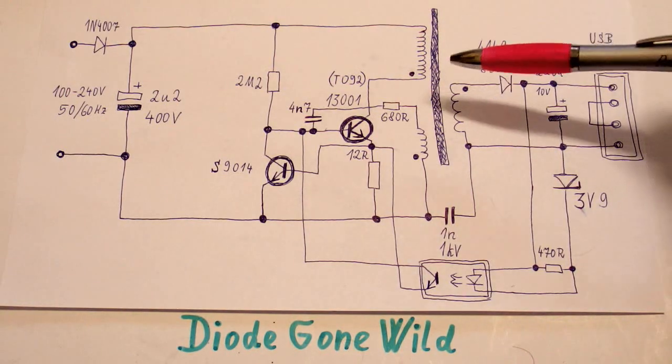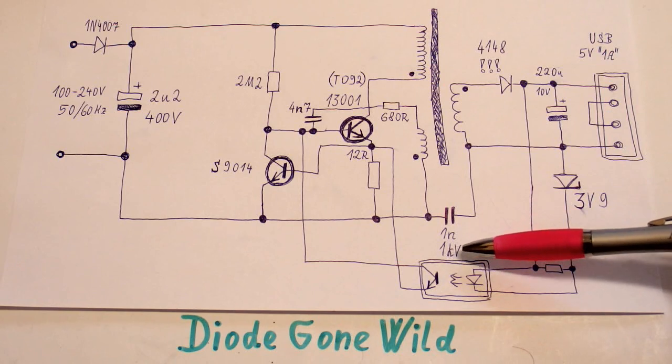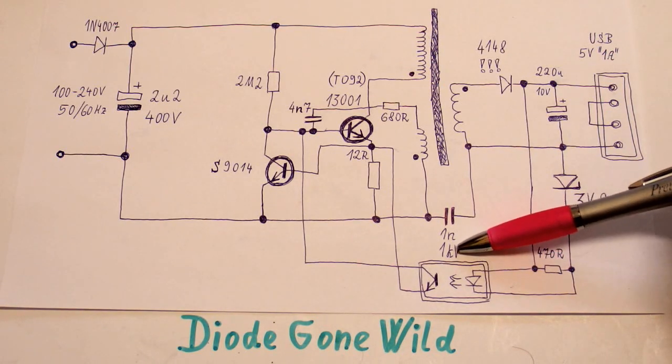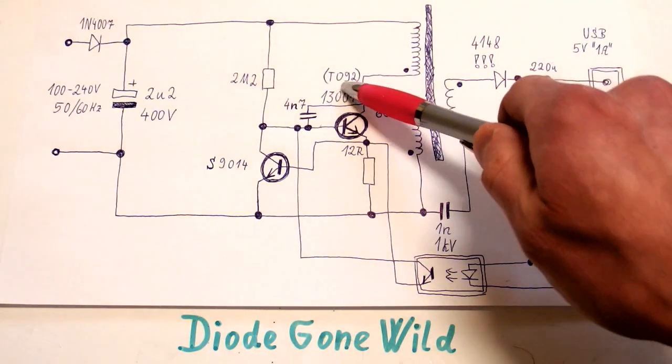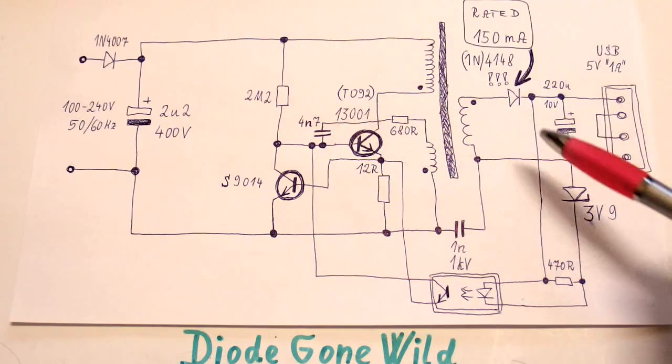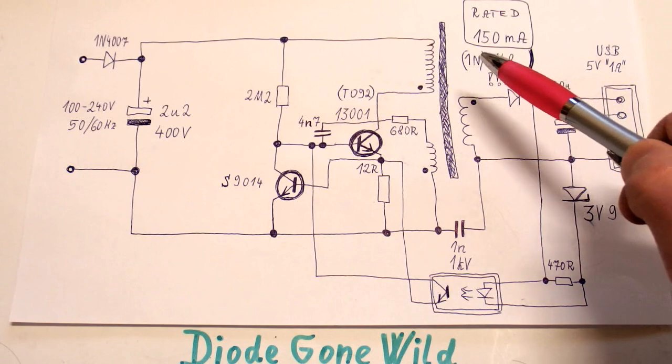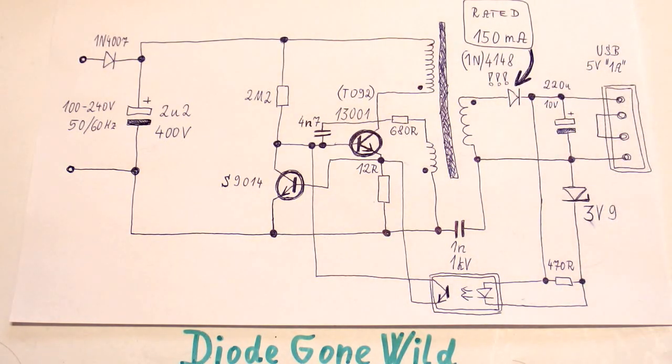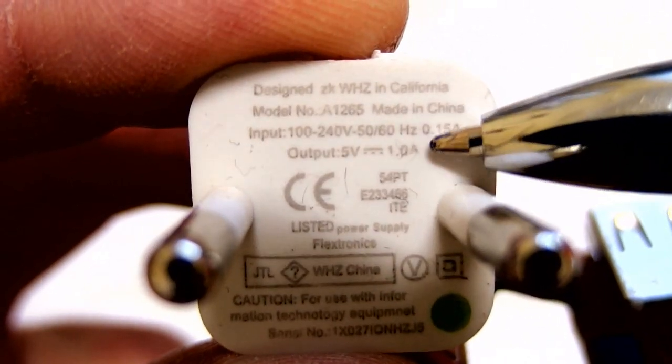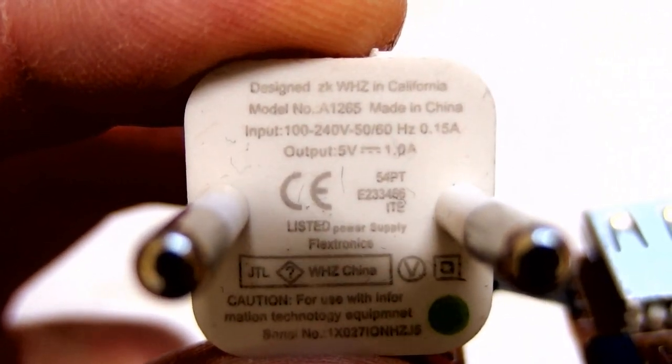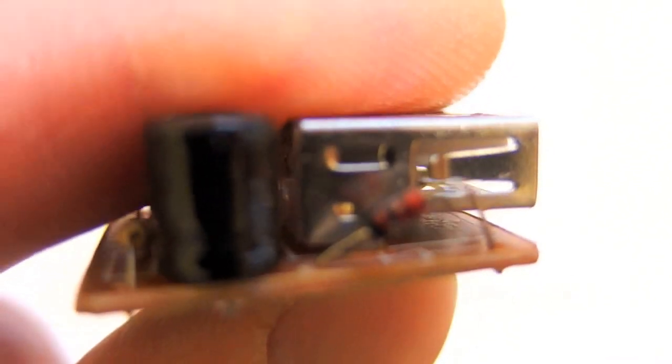This capacitor again is just one microfarad. It should be class Y1 safety capacitor. This transistor is just a tiny transistor in TO92 package. And the diode at the output is 1N4148. The diode rated for 150mA. But the output current should be 1A. It really says 1A, but the output current is being rectified by 150mA diode. And this is the diode. Are you kidding me? This is really supposed to carry 1A.